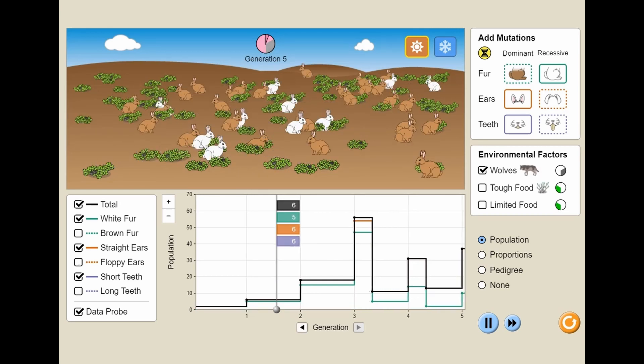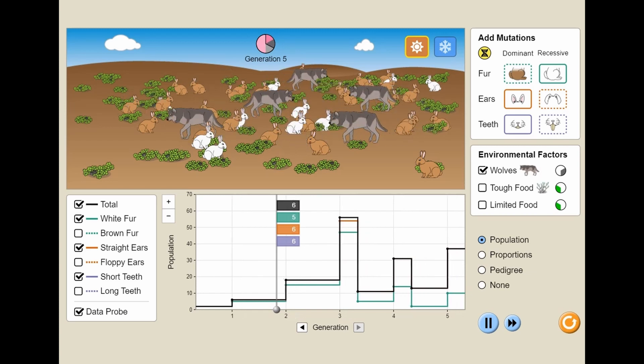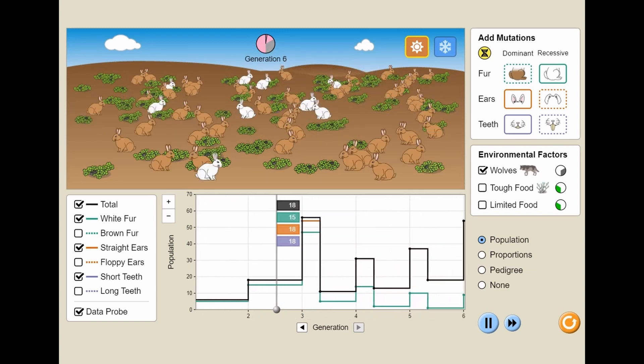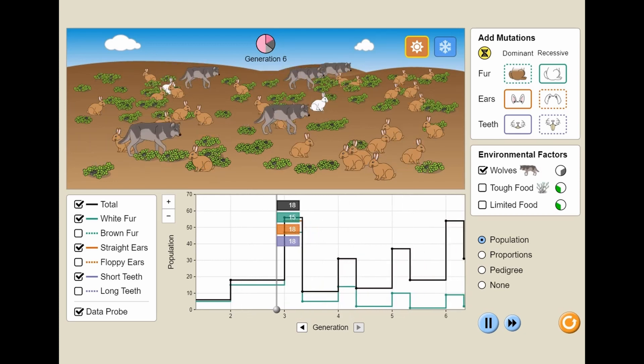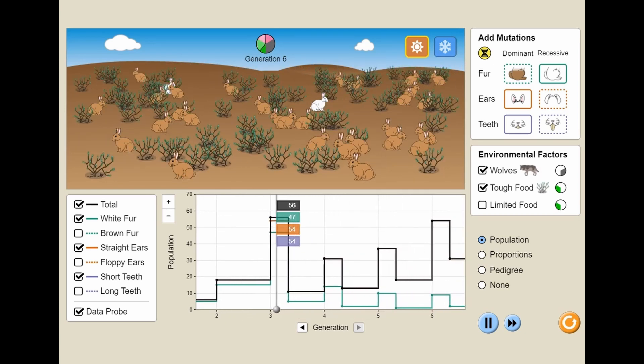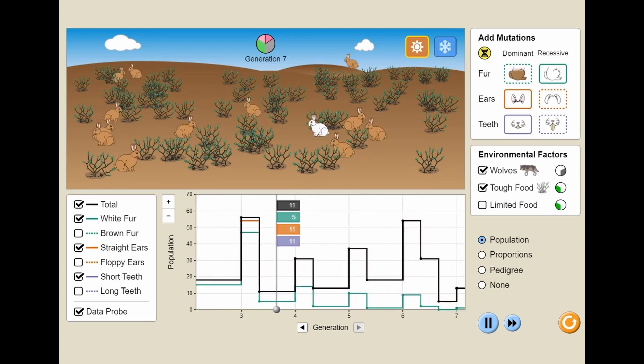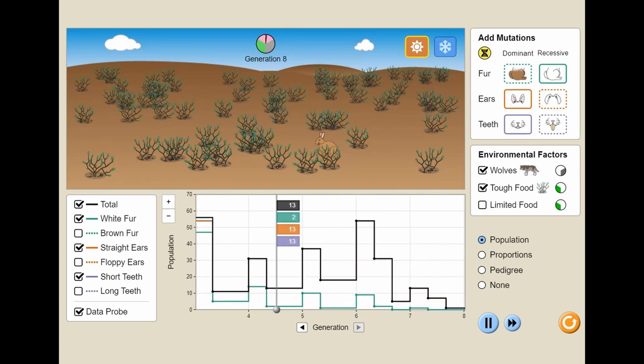Play the simulation and observe how bunnies mutate in their environment. Click on the Add Mutations pictures and observe what happens to the bunnies. Click on the Environmental Factors to select the empty boxes and observe what happens. Observe the graph and see how the generations have mutated.